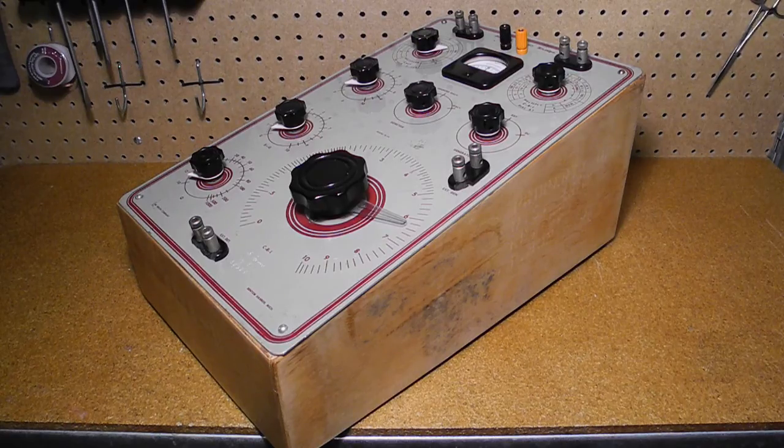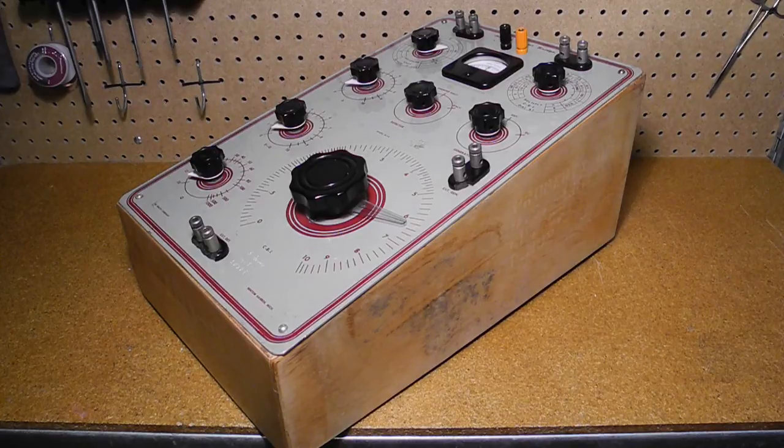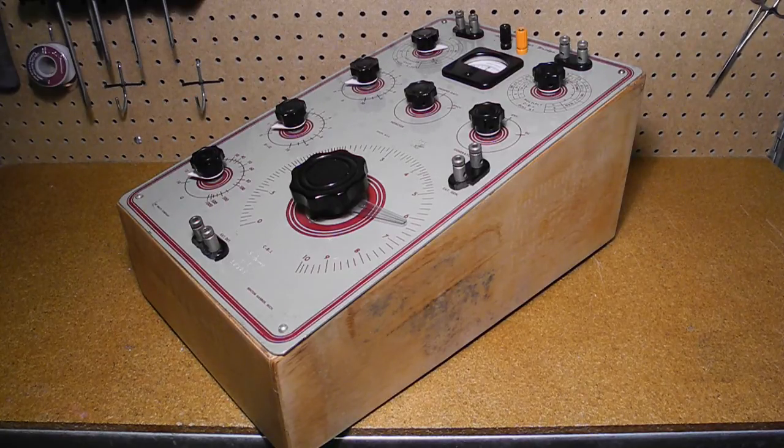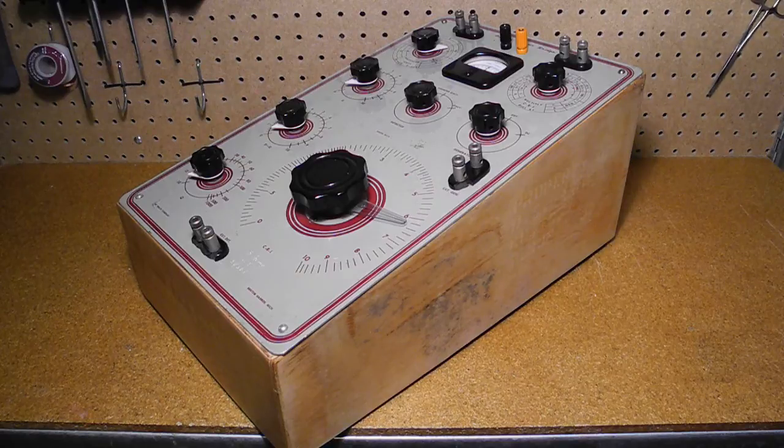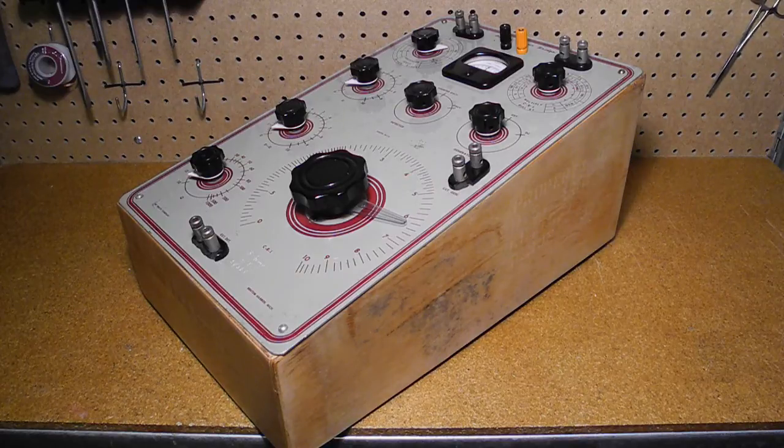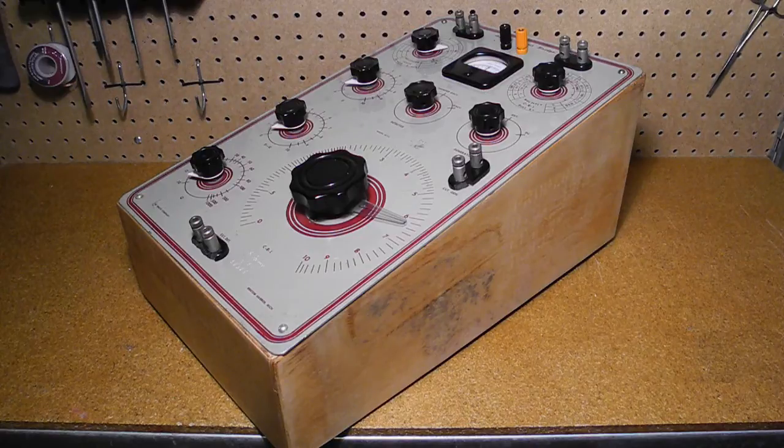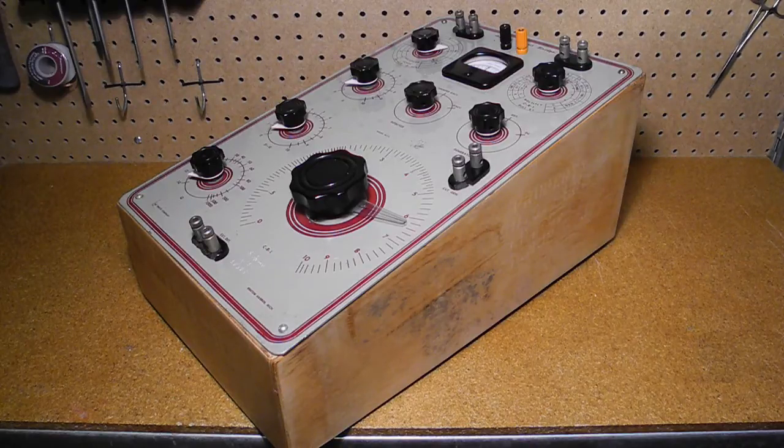The wooden case is a little unusual for Heathkit test instruments. The top panel is metal and follows the gray with red lettering color scheme used by Heathkit instruments of this era. I'll explain how measurements are made when we get to the demonstration portion of the video.